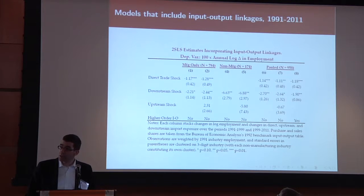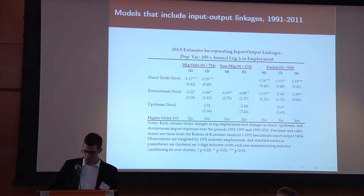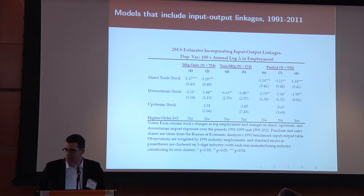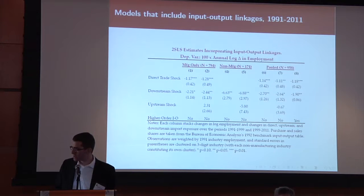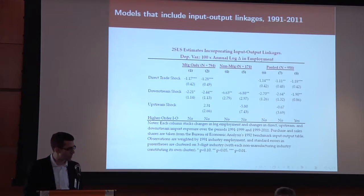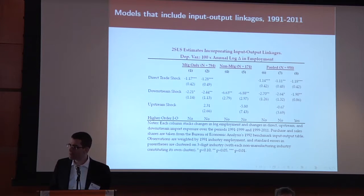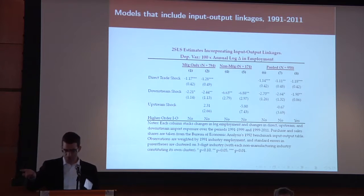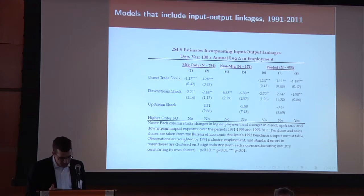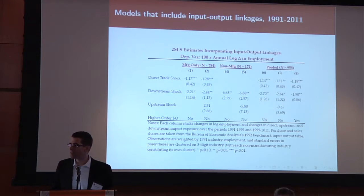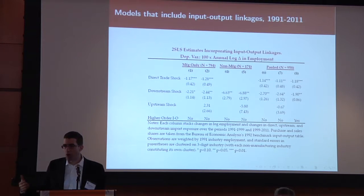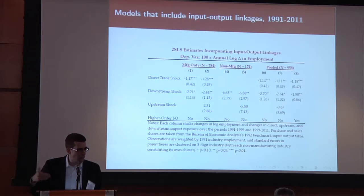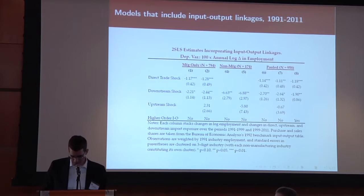We have two time periods with 392 manufacturing industries each in columns one and two, and 87 non-manufacturing sectors, again times two periods, in columns four and five. For the upstream shock, there is a potential channel through which imports from China might actually create employment if industries benefit from cheap inputs. In column two we see an estimate going a little in that direction. In the non-manufacturing sector in column five, the effect points the other way — more consistent with a wholesale firm that used to buy from a local manufacturer, and now that manufacturer is gone.